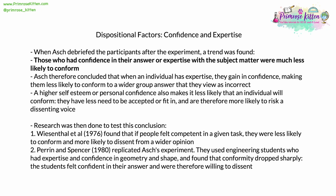Research supports this conclusion. In 1976, Weisenthal found that people who felt competent in a task were less likely to conform and more likely to dissent from the wider group opinion. In 1980, Perrin and Spencer replicated the Asch experiment using engineering students, who had expertise and therefore confidence in geometry and line. Conformity dropped very sharply — the students felt confident in their dissenting answers and were willing to risk ostracisation to maintain them.